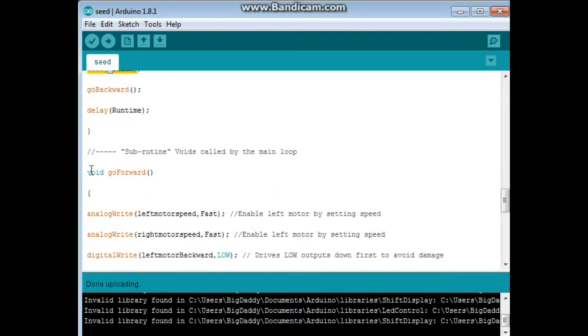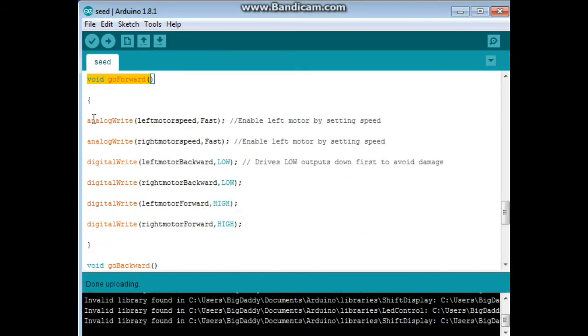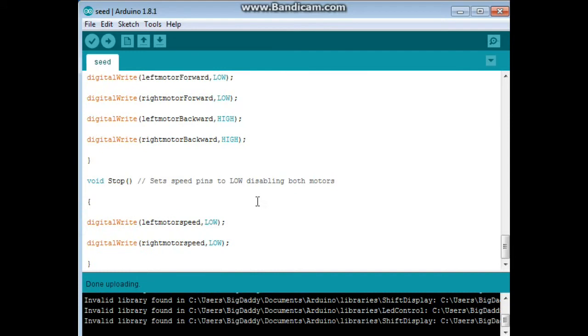Now, here in these functions, here's go forward. So, we say analog right left motor speed will be fast. Right motor speed will be fast. Now, we're just setting the speed there. We're not activating them. Then we drive them both low to stop whatever position they were both in. Then we drive them high to activate our loop. Same thing for go backward. And stop. The function stop just drives them both low. So, they both stop. Alright.